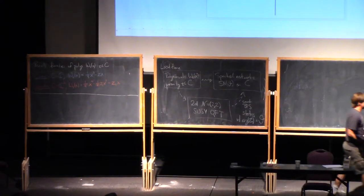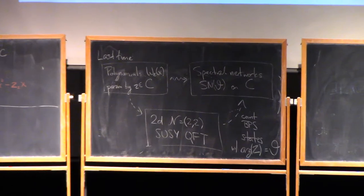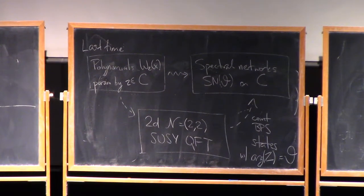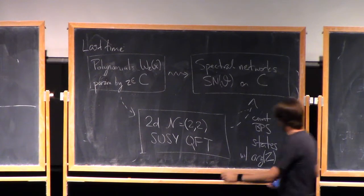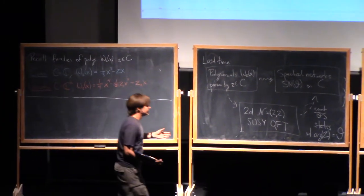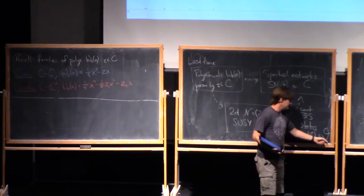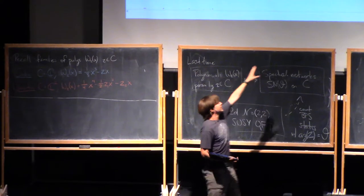As we said last time, a BPS state comes with this funny invariant associated with it, a complex number. The mass is equal to the absolute value of this number. And so the slightly more refined question was, what are all the BPS states that have phase where the phase of the central charge is equal to theta? And so this picture is supposed to be the answer to that question.